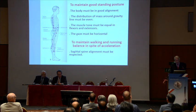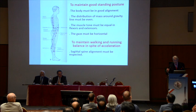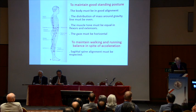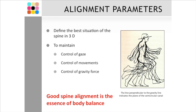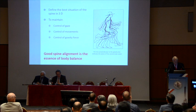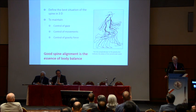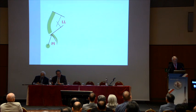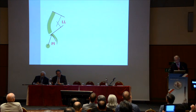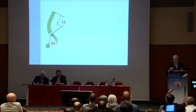And that to maintain walking and running balance — running balance is a matter of fighting acceleration and staying aligned. In running, for instance, you have to keep control of the gaze, control all the movements, and control the gravity force permanently. So, good spine alignment is the essence of body balance. For that reason, I sort of play on the word alignment versus balance, because here I'm talking about alignment.